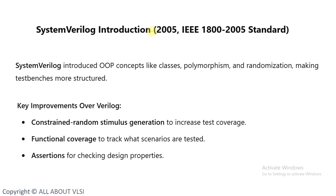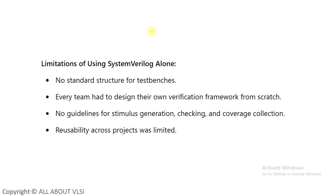In 2005, SystemVerilog was introduced with OOP concepts like classes, polymorphism, and randomization, making test benches more structured. Key improvements included constrained random stimulus generation for increasing test coverage, functional coverage to track what scenarios are tested, and assertions for checking design properties.